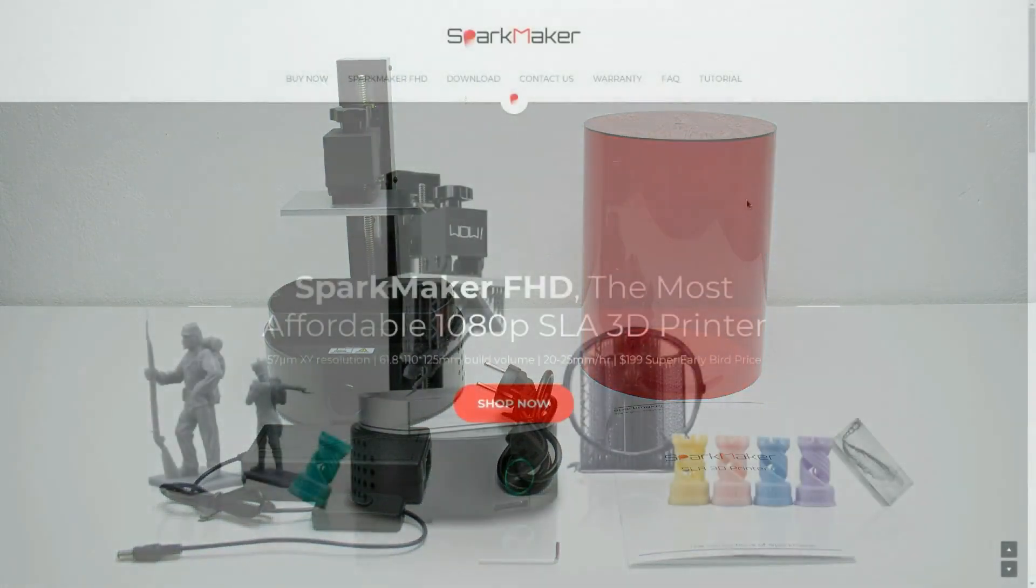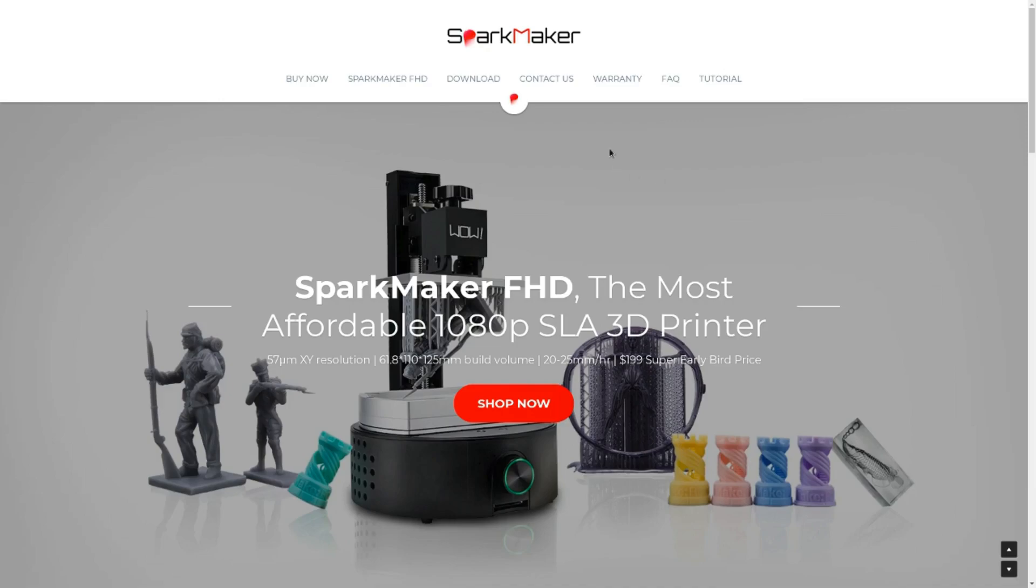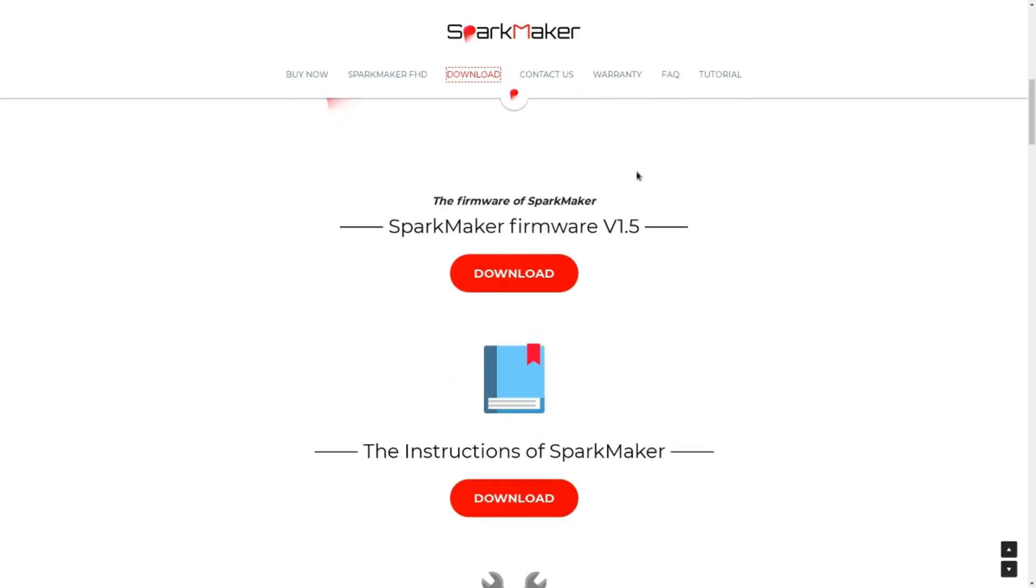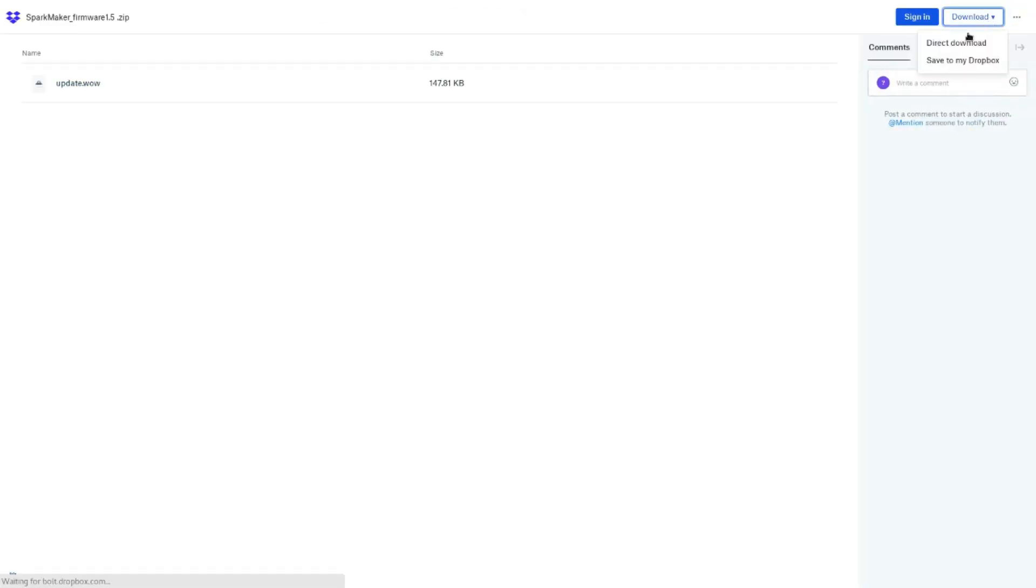The first thing we are going to do is to upload the newest firmware to the printer. Go to the download section of the Sparkmaker site, find the firmware download, download it and extract the file to your SD card.